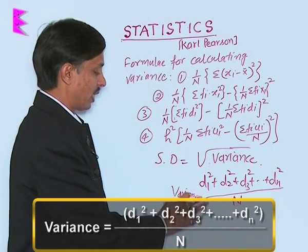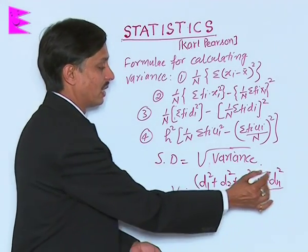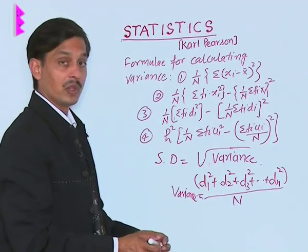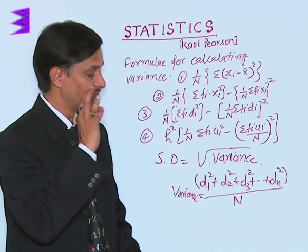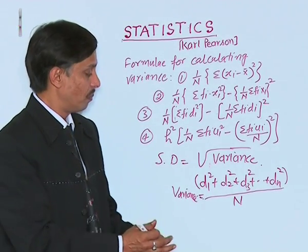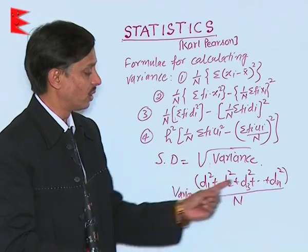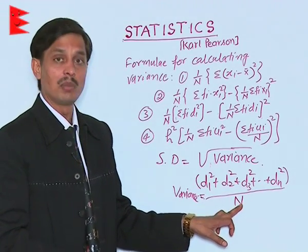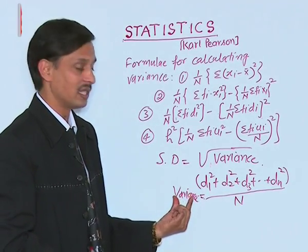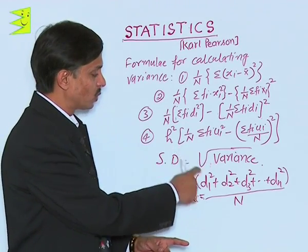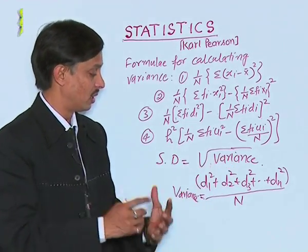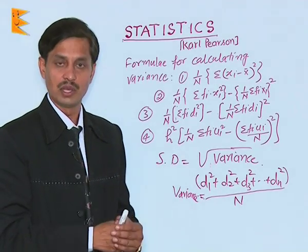What is variance? To calculate variance, obtain the mean, subtract the mean from each observation to get deviations, square them, add those values, and divide by the number of observations. Standard deviation is the square root of variance.